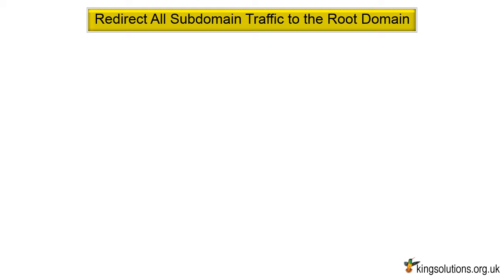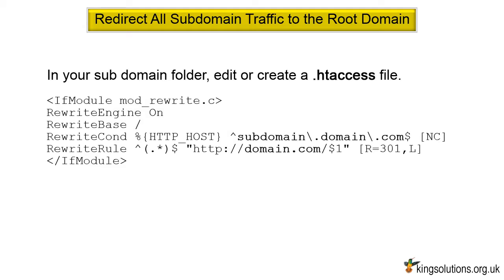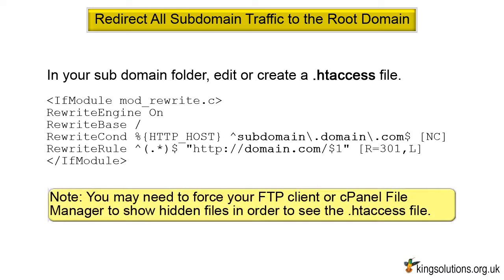Redirect all subdomain traffic to the root domain. With the WordPress files moved and all pointers to the subdomain corrected, you need to ensure your subdomain traffic is redirected to the root domain website. In your subdomain folder, edit or create a .htaccess file. To redirect subdomain traffic, enter the redirect code — I will place the code below the video so you can copy and paste. You may need to force your FTP client or cPanel file manager to show hidden files in order to see the .htaccess file. When using this code, replace 'subdomain' with your subdomain, 'domain' with your domain name, and 'com' with your top-level domain. Note that the rewrite rule uses a non-www URL — if you want to use www in your root domain, you will need to add a www prefix to your code.